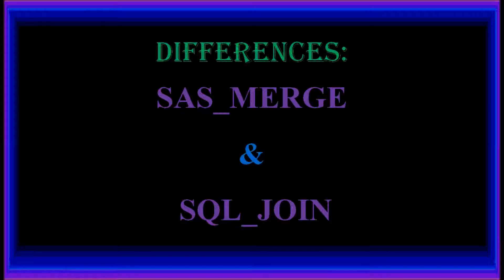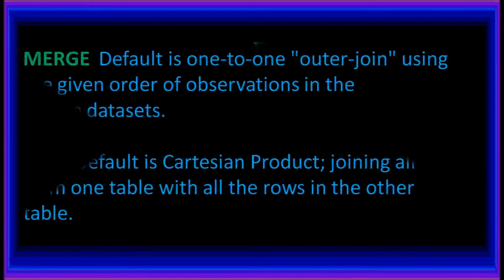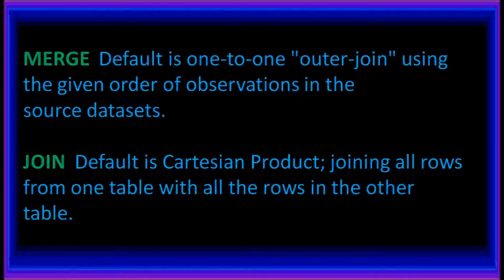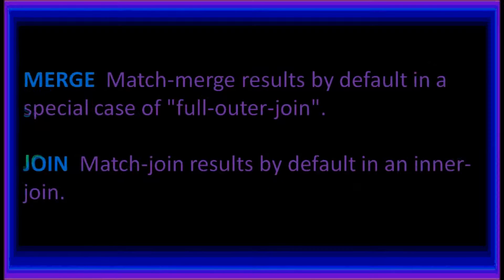Differences between SAS MERGE and SQL JOIN. MERGE default is a one-to-one outer join using the given order of observations in the source datasets. JOIN default is a Cartesian product, joining all rows from one table with all the rows in the other table. MATCH MERGE results by default in a special case of a full outer join.